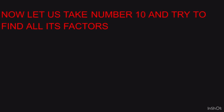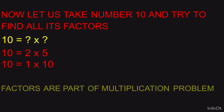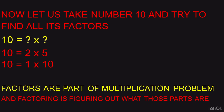Now let us take the number 10 and try to find all its factors. 10 can be written as 2 into 5. But is this the only way? We can also write 10 as 1 into 10. Both are correct — don't get confused. You are used to having one correct answer in maths, but in factors you can have more than one correct answer. So 2 and 5 are factors of 10, and 1 and 10 are also factors of 10. Factors are part of a multiplication problem, and factoring is figuring out what those parts are.